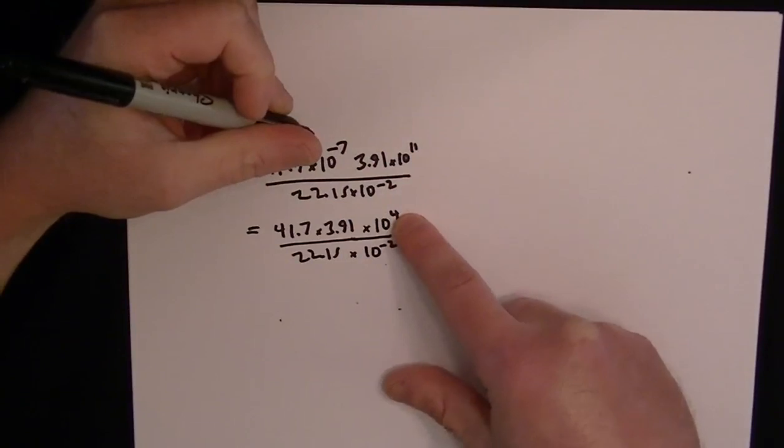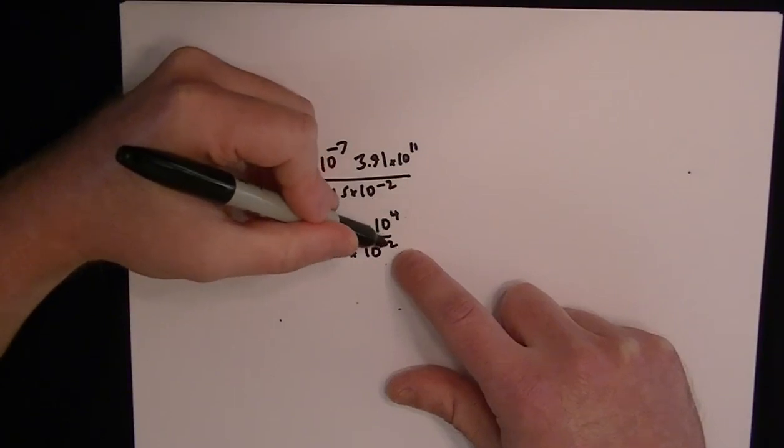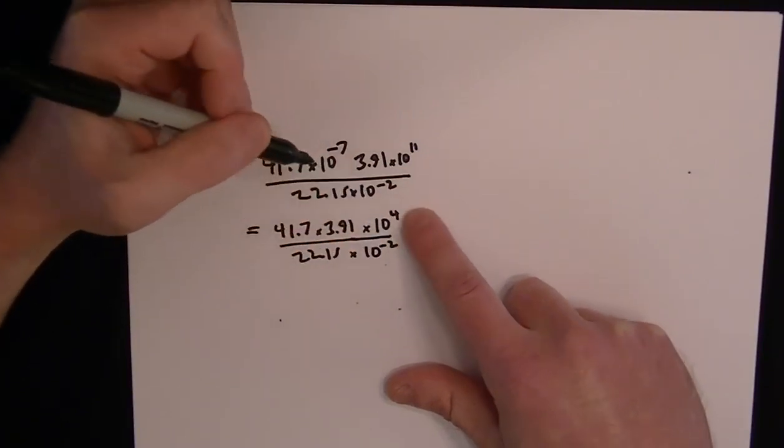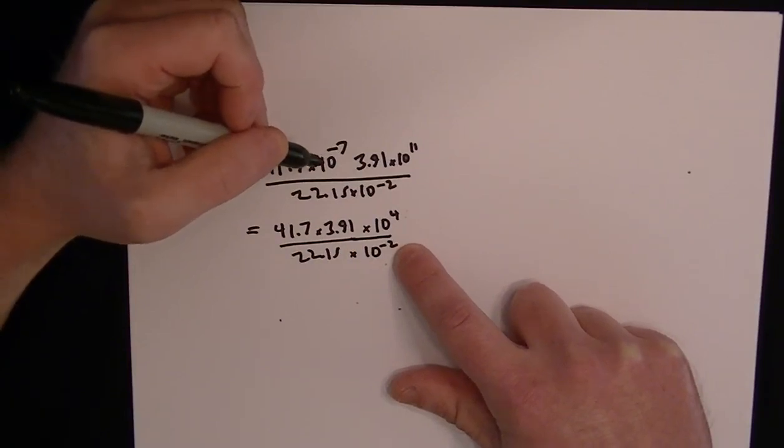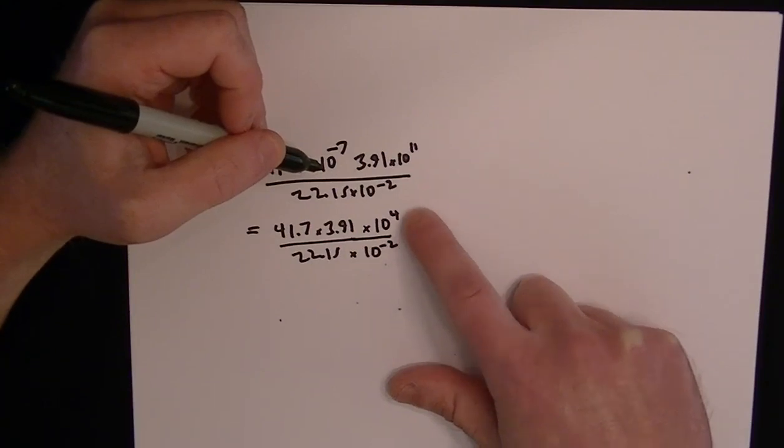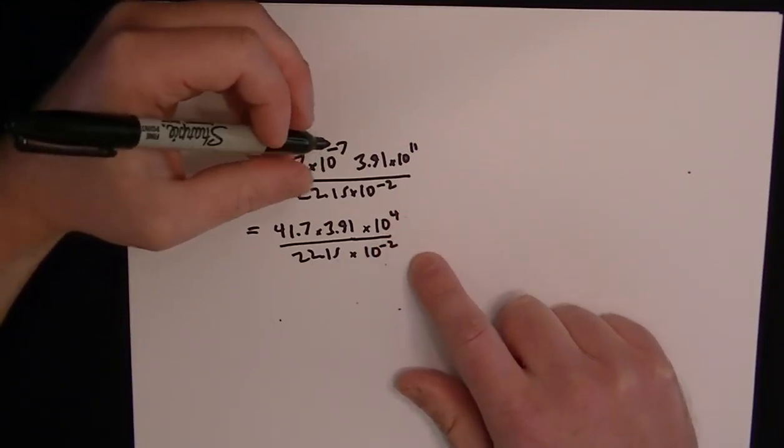Now, because you've got the powers of 10 being divided, you've got to subtract the exponents. So you've got 4 minus a negative 2. If you subtract a negative number, it's the same as adding the positive number. So 4 minus a negative 2 is the same as 4 plus 2. Then this part simplifies to become 10 to the 6.